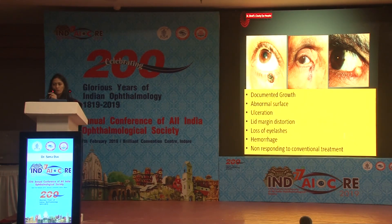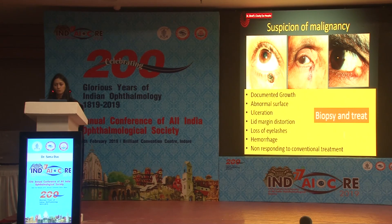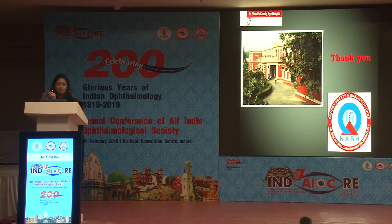To conclude: any documented growth in an eyelid lesion is suspicious. Any abnormal surface, ulceration, distortion of the lid margin, loss of eyelashes, or hemorrhages are features that give us a clue we could be dealing with something ominous. And if a patient is not responding to the treatment given, these are indications to suspect malignancy, proceed with biopsy, and treat the patient accordingly. Thank you.